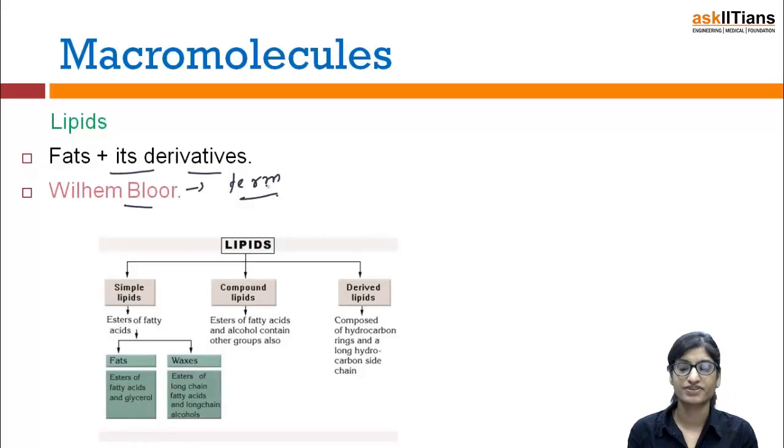Now, the classification of lipids. They have been categorized into three categories: simple lipid, compound lipid, and derived lipid. We have learned about simple lipids in the micromolecules part where we learned about fats and waxes. In the macromolecule part, we are going to learn about compound lipids and derived lipids.